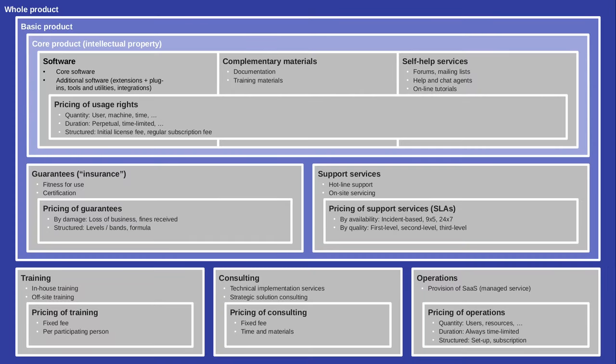So what is it that you could be selling? The whole product includes the basic product, which in turn includes the core product. Working inside out from the core product: that would be the core software, and maybe you want to structure that software into aspects of core software and additional drivers that you might sell separately. Even for the core product you need some complementary materials.